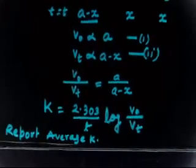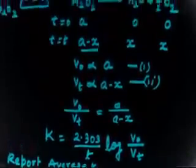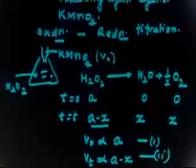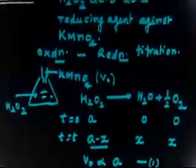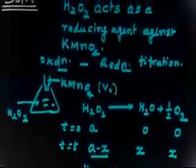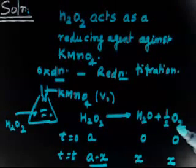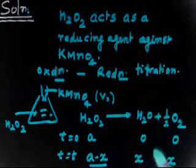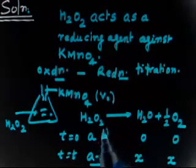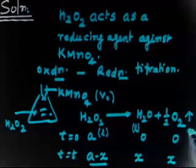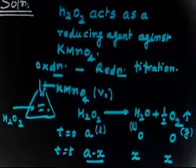Another way to measure the reaction rate for decomposition of H2O2 is to measure the volume of O2 evolved. In this reaction, H2O2 (liquid) gives H2O (liquid) plus half O2 (gas). So since all other substances are liquid, we can measure the volume of the gaseous O2 produced.